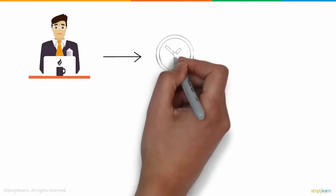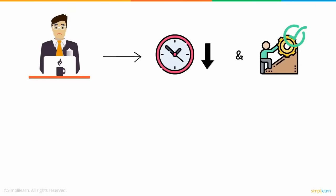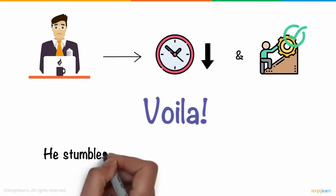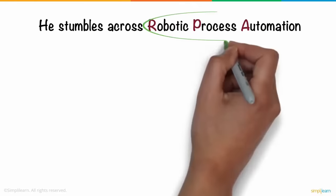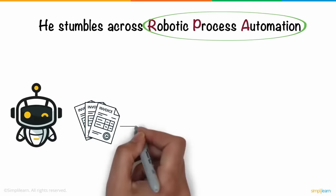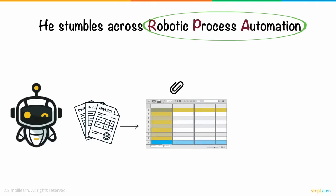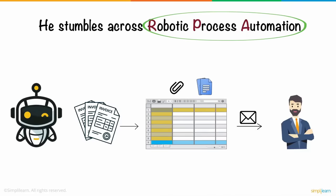Frustrated, Jim looks for a way to reduce the time and effort it takes to complete the task. And voila! He stumbles across Robotic Process Automation, aka RPA. Using RPA, he builds a simple bot that extracts information from several invoices into an Excel sheet, attaches all the necessary financial reports and sends them over to his superiors via email at a specific time every day.